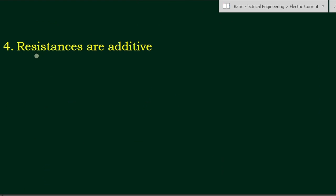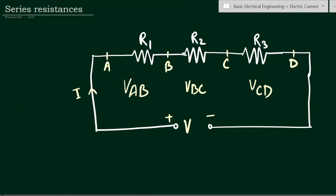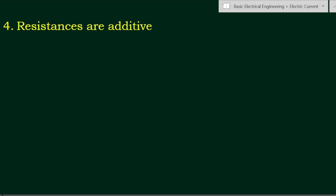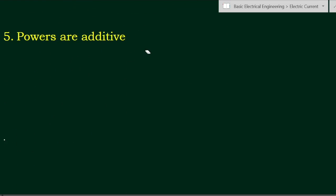The fourth property is that resistances are additive. In a series connection, to find the equivalent resistance we add the individual values of R1, R2, and R3. The equivalent resistance R_equivalent equals R1 + R2 + R3.